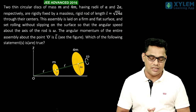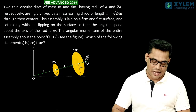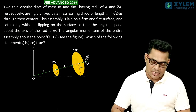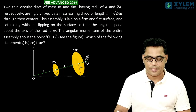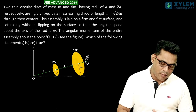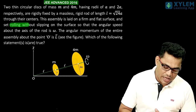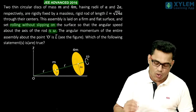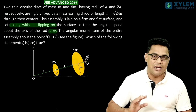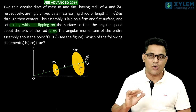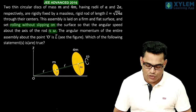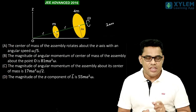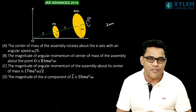Let me explain what is given in the question. There are two discs of mass m and 4m having radii a and 2a. They are connected by a rigid rod whose length L is given as root 24a. One very important thing to note: rolling without slipping on the surface so that the angular speed about the axis of the rod is omega — that is the spinning angular speed given as omega. There are four options given. We need to check them one by one, treating every option separately.